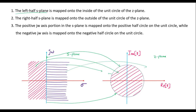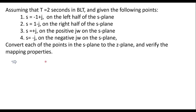Now we will try to solve the problem and verify whether these three mapping properties are satisfied or not. In bilinear transformation, the relation between s-plane and the z-plane is given by the equation s equal to 2 by T, times z minus 1 divided by z plus 1. Here, T value is given as 2 seconds. Therefore, substituting T equals 2, we can write s equal to z minus 1 divided by z plus 1.